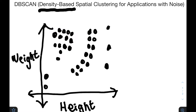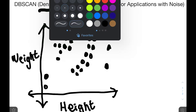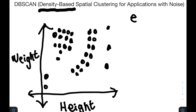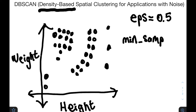Basically, how this works is we have to tell DBSCAN a couple of different things. We have to tell it epsilon, which is a distance value — we'll call it eps, because that's what scikit-learn uses — and we'll set this equal to 0.5. We also have to specify min_samples, and we'll set this equal to 3. When you're actually trying to find the correct values, there's a way of optimizing and fitting that, which I'll show in the coding video. But for now, we'll assume epsilon is 0.5 and min_samples is 3.